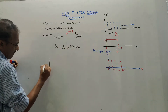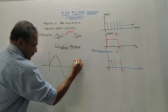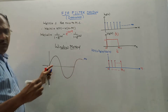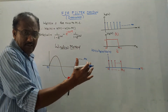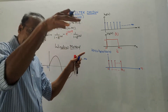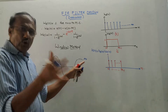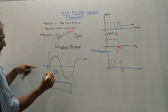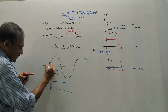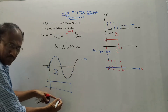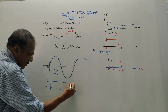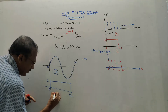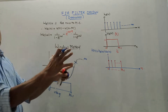I will explain what the windowing method is. Suppose I have a sine wave — for simplicity I am considering a continuous waveform, but it is applicable for discrete waveforms. If this sinusoidal waveform goes from 0 to infinity and I want to filter it, the length of the impulse response H(n) will be very large — infinity. To avoid this, I design a rectangular function with amplitude 1, present from 0 to M minus 1. Multiplying the two waveforms, only the portion from 0 to M minus 1 is retained; the rest is cancelled. This technique is known as the window method.